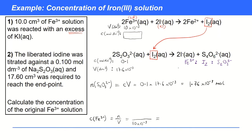Looking at the two steps separately: in step one, Fe³⁺ is related to iodine — two moles of Fe³⁺ react to form one mole of I₂. In step two, one mole of I₂ reacts with two moles of sodium thiosulfate. Reading this overall, two moles of Fe³⁺ react to form one mole of iodine, and that one mole of iodine reacts with two moles of sodium thiosulfate.